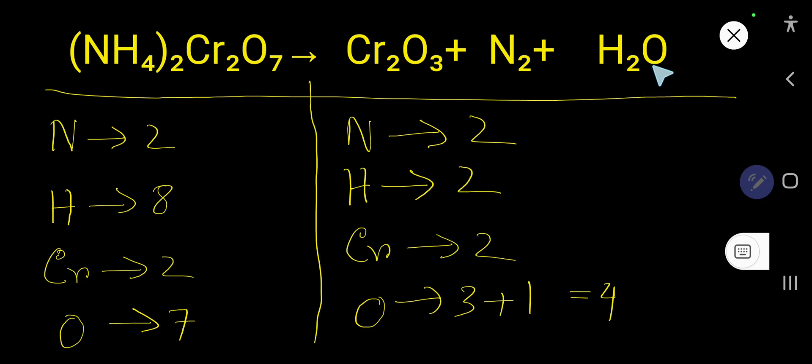Here we have 1 oxygen already we have written. So look, nitrogen is 2, nitrogen is balanced, but hydrogen is 8 on the left, hydrogen 2 on the right, so we can balance this hydrogen.